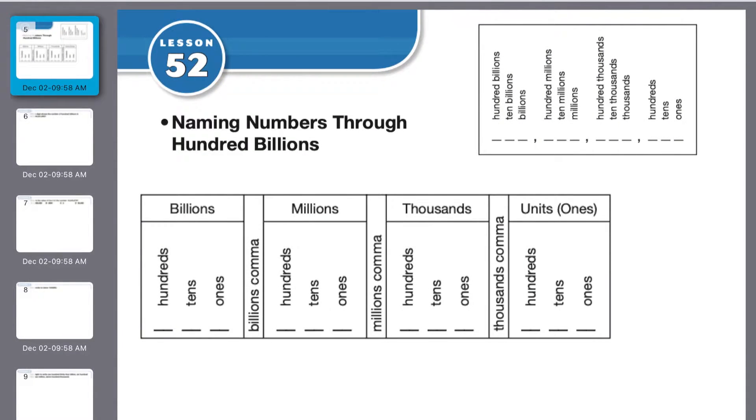Alright, lesson 52, naming numbers through hundred billions. So we have two charts here that give you an easy way to remember where each number goes. You have ones, tens, hundreds.